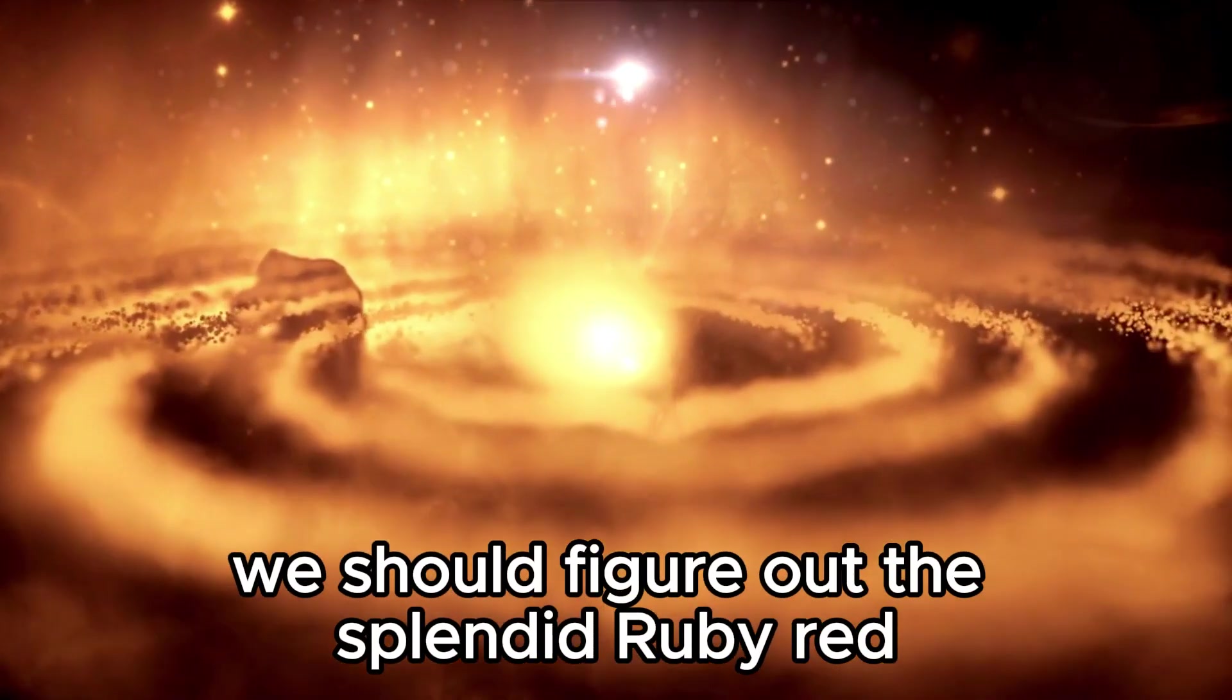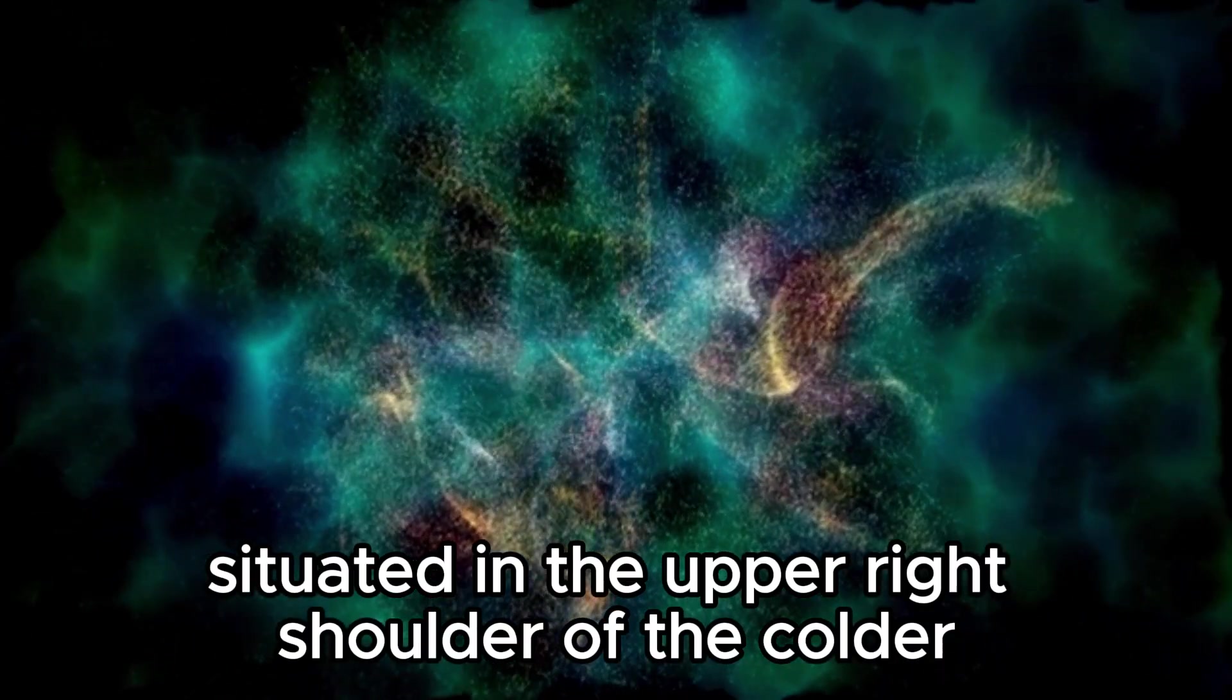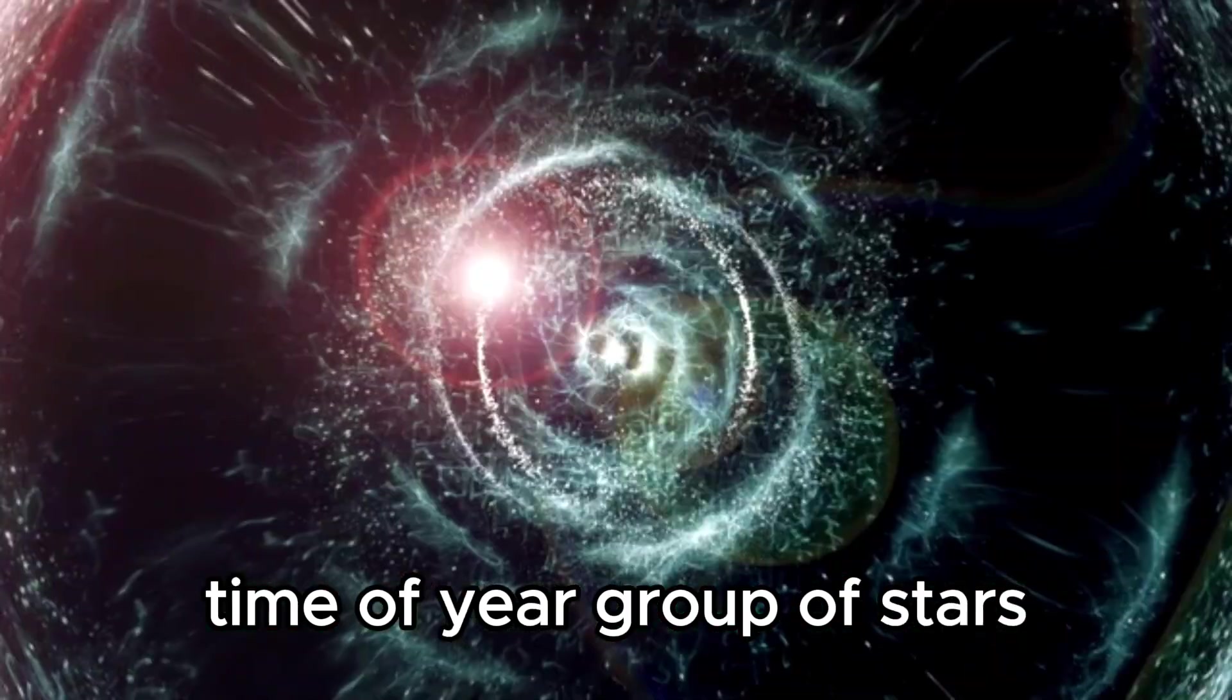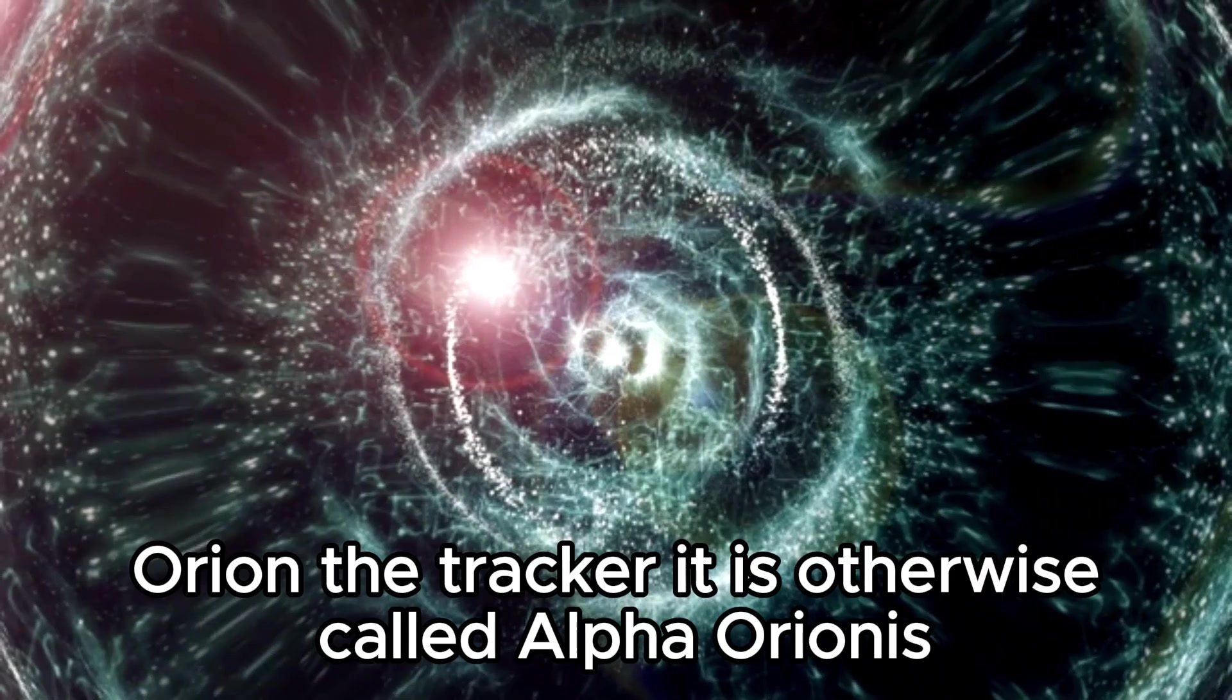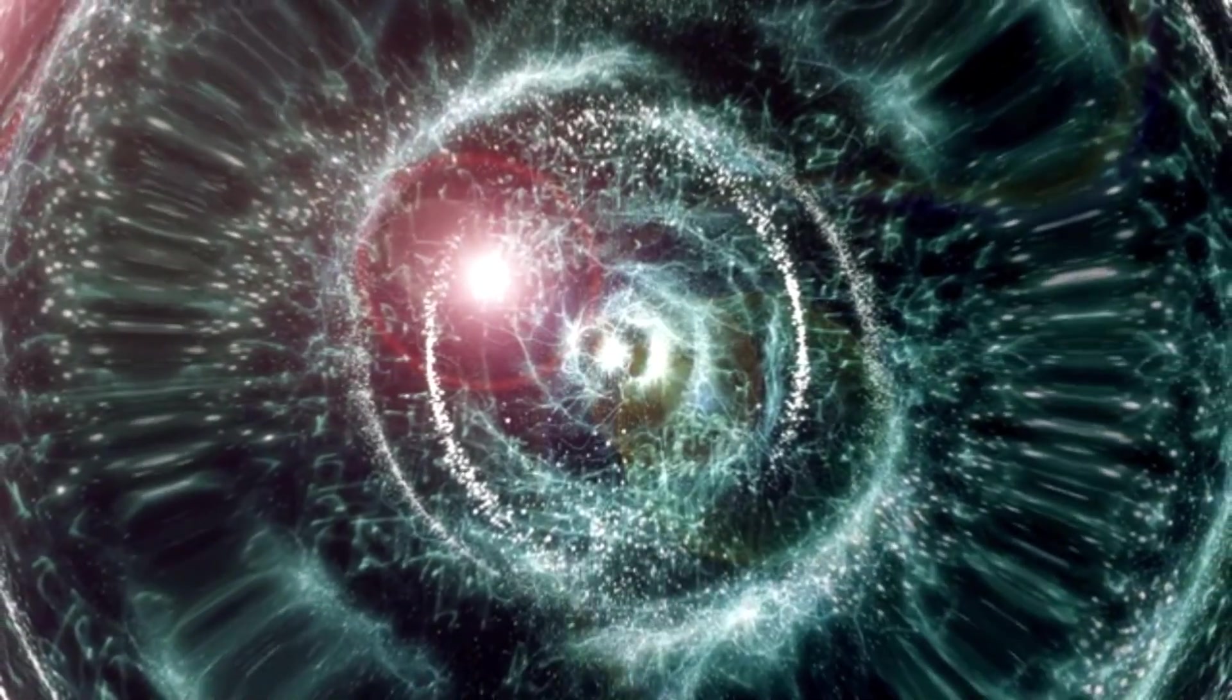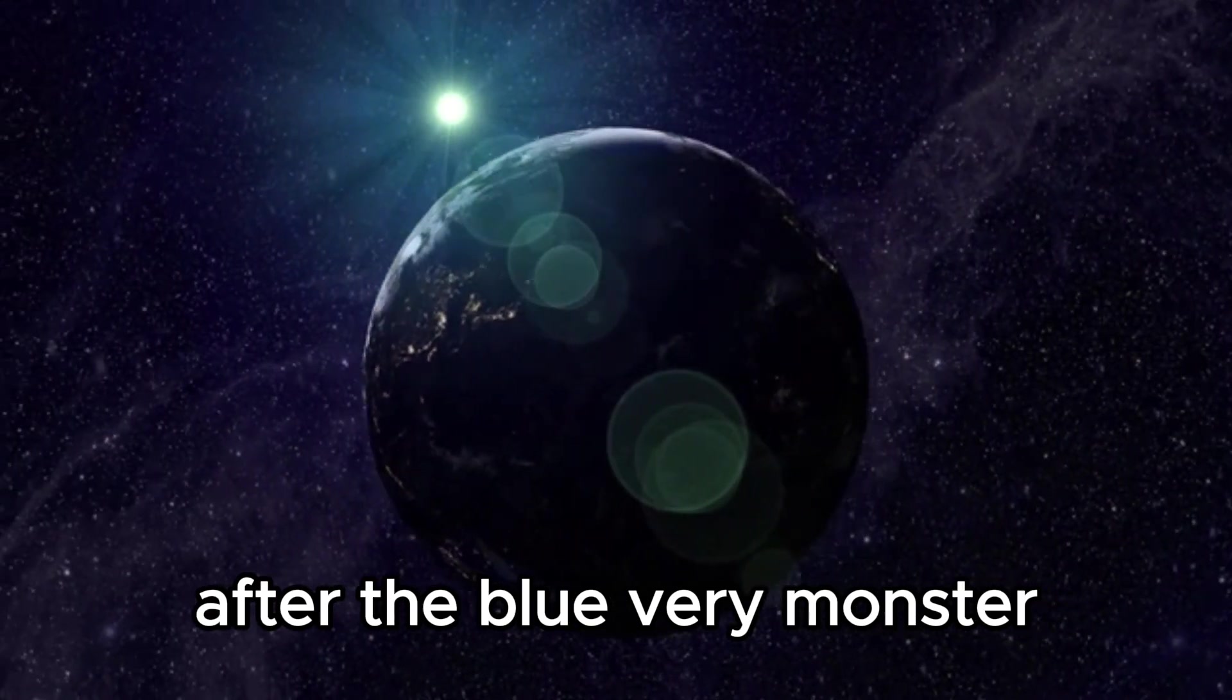The splendid ruby red sparkling star known as Betelgeuse is situated in the upper right shoulder of the constellation Orion the hunter. It is otherwise called Alpha Orionis, the second most splendid star in the constellation after the blue super giant.